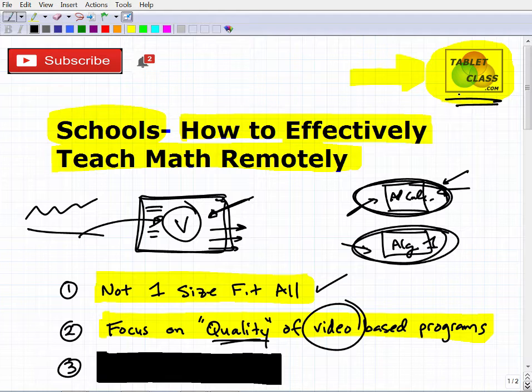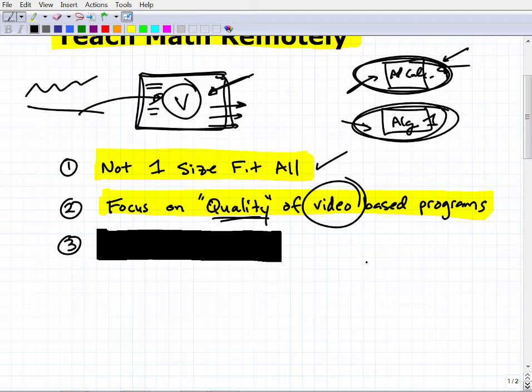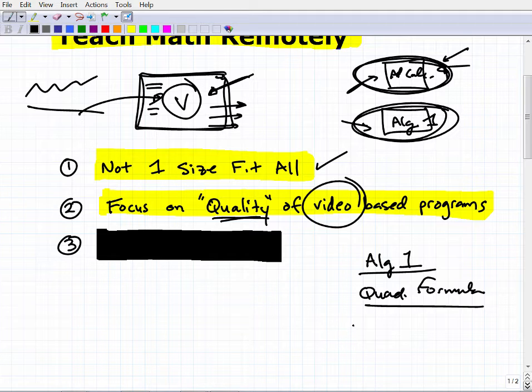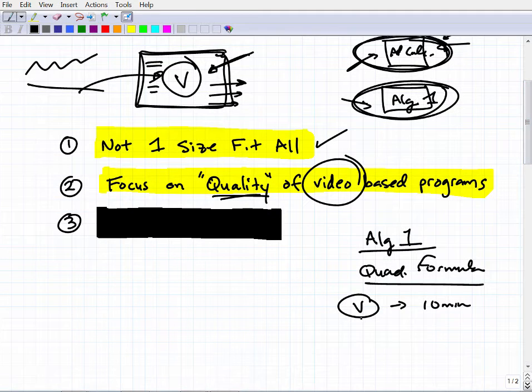My Algebra 2 course took me two to three years to develop the amount of instruction because I wanted to make it high quality. It is a huge undertaking if you're going to try to develop a system that is very comparable to what a student gets. A quick video lesson, maybe 10 minutes, with one or two examples, is not nearly enough.